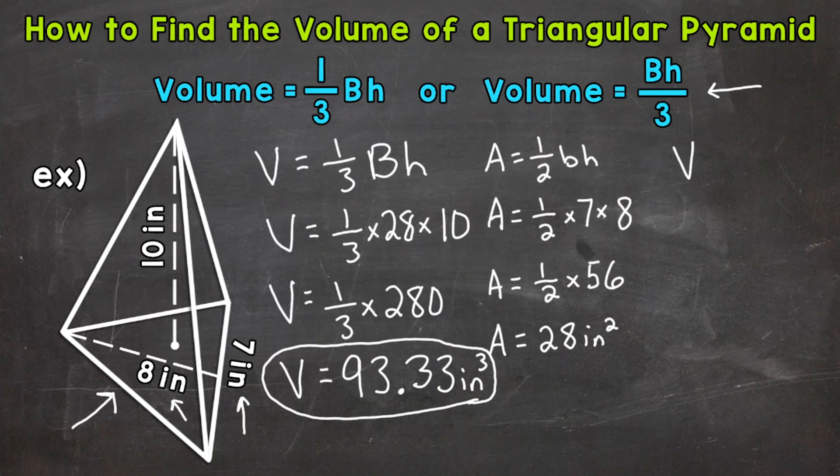So we will write out our formula. So area of the base times the height divided by 3. Now we plug in. So the area of the base, well we said that was 28. We already solved for that. Times the height of 10. And divide that by 3.